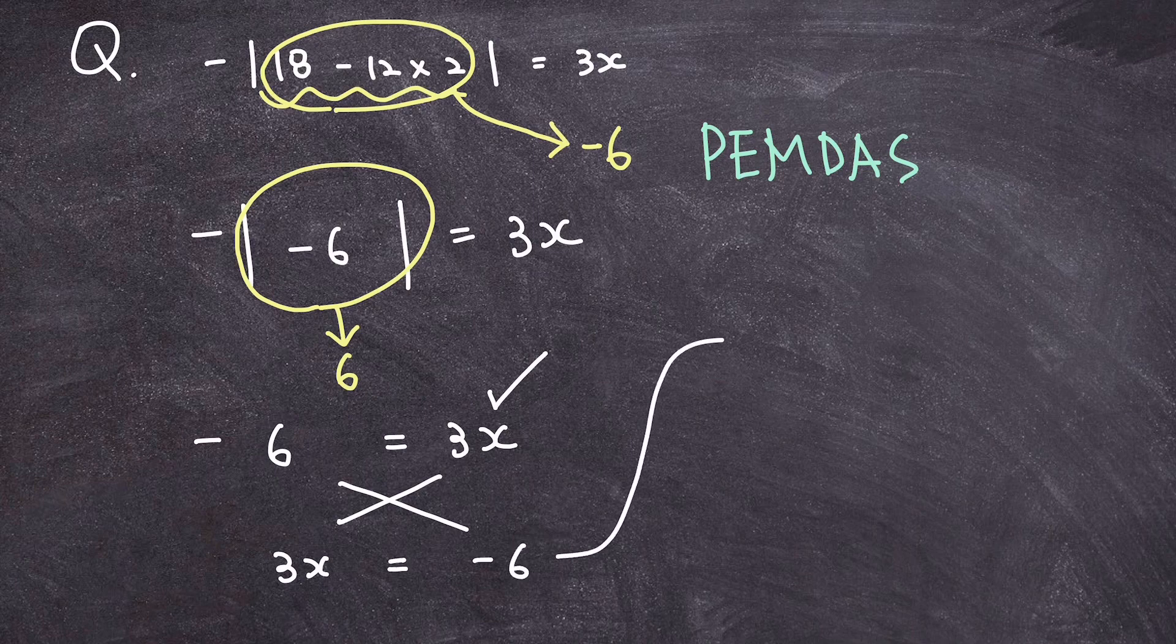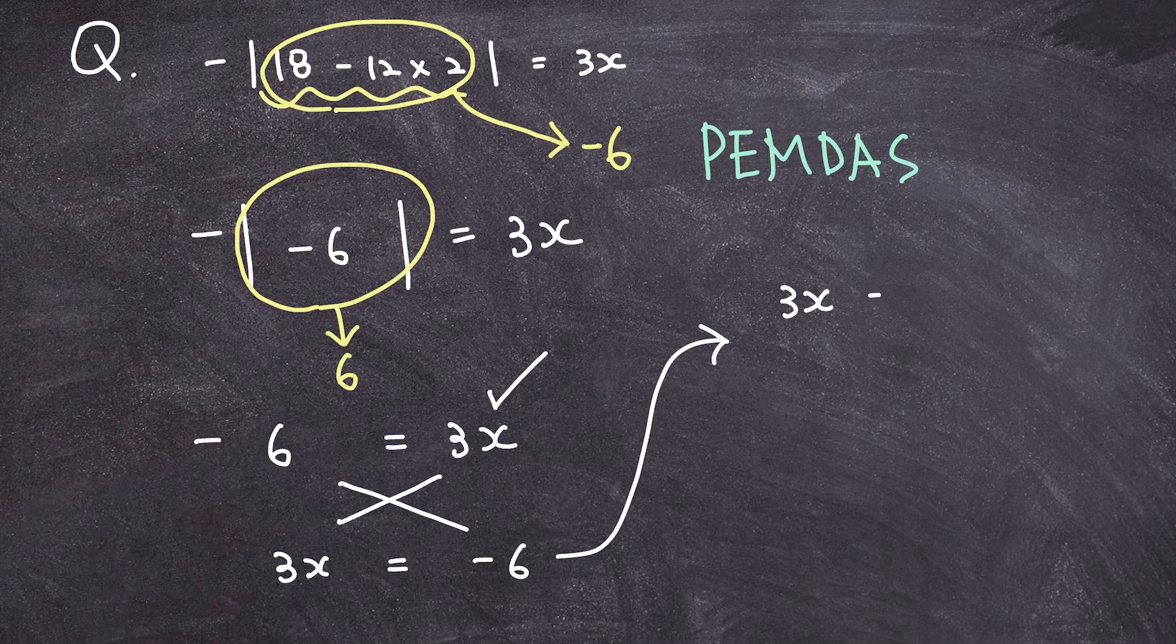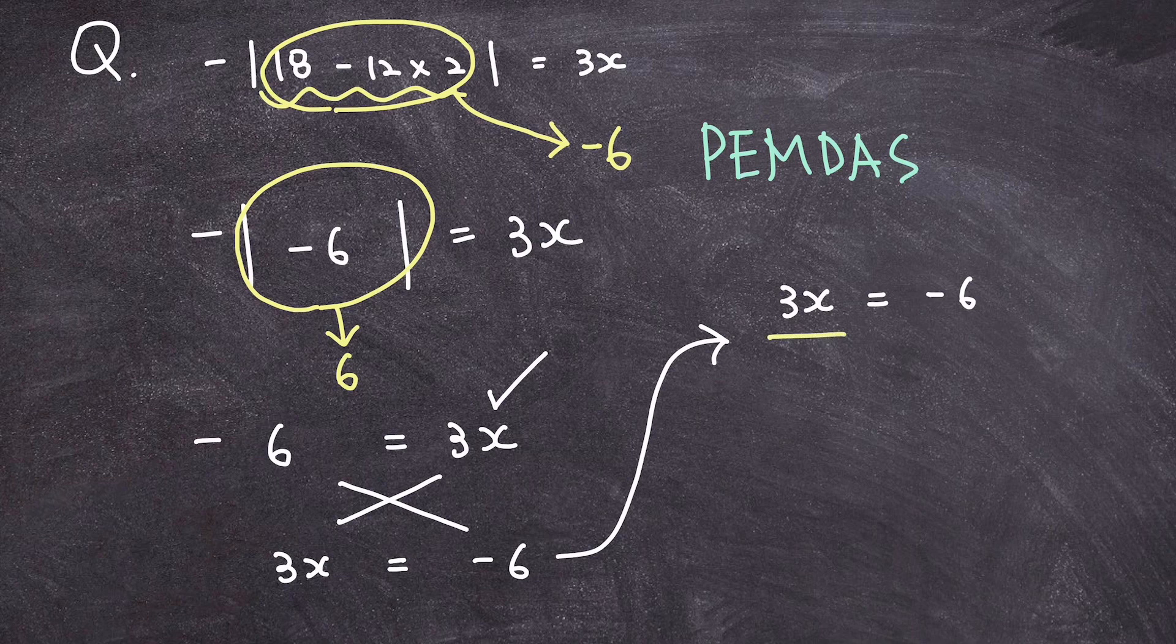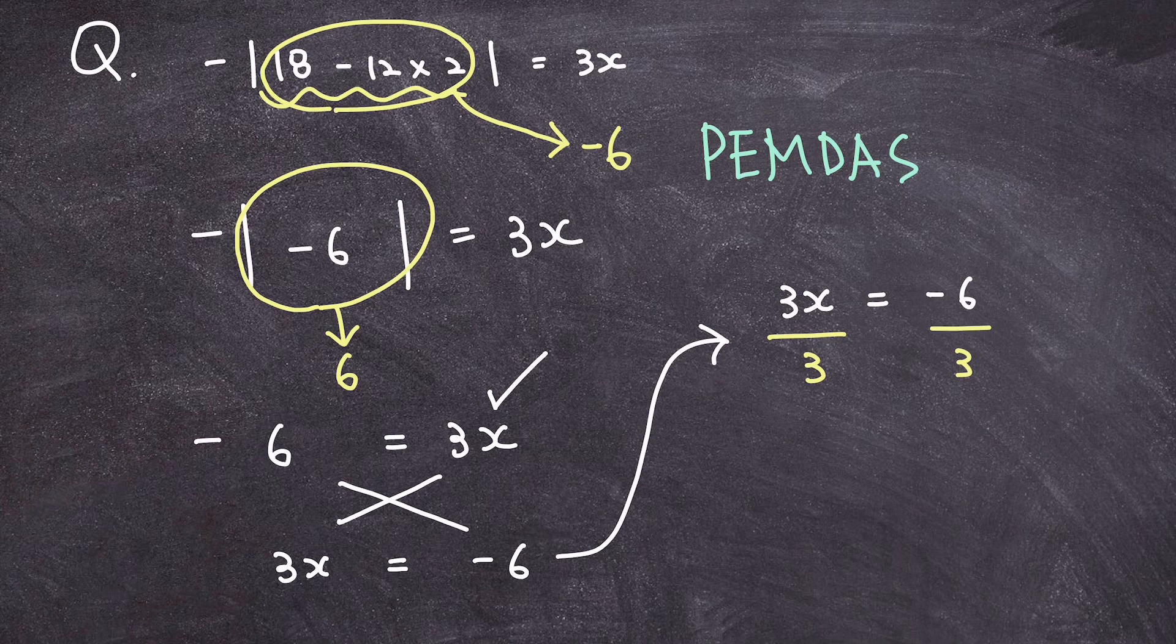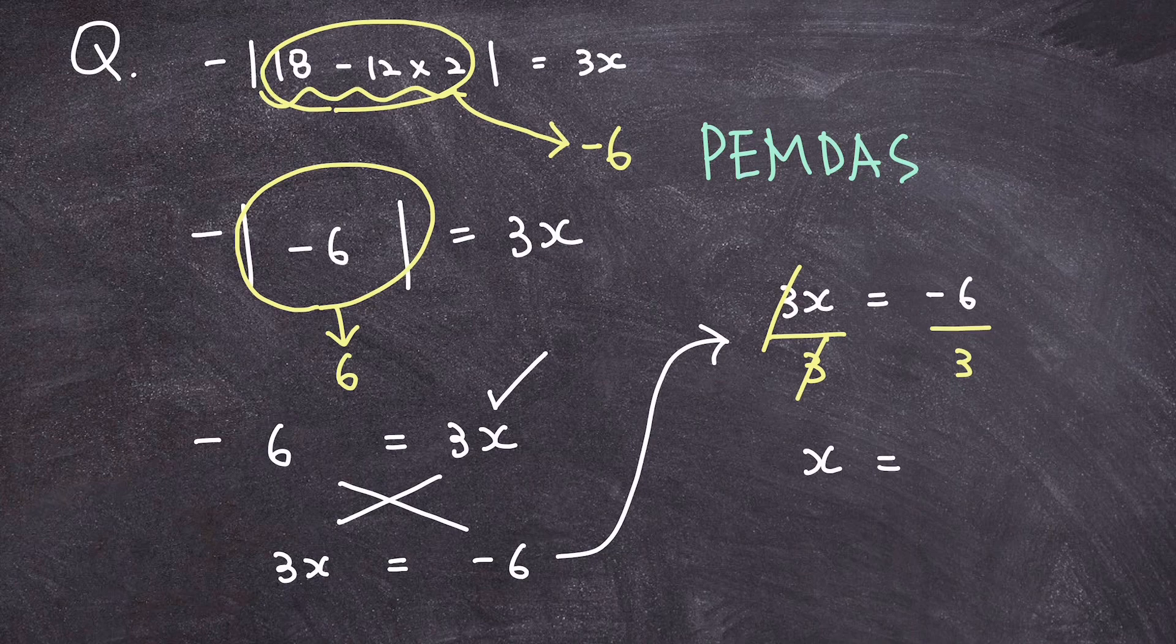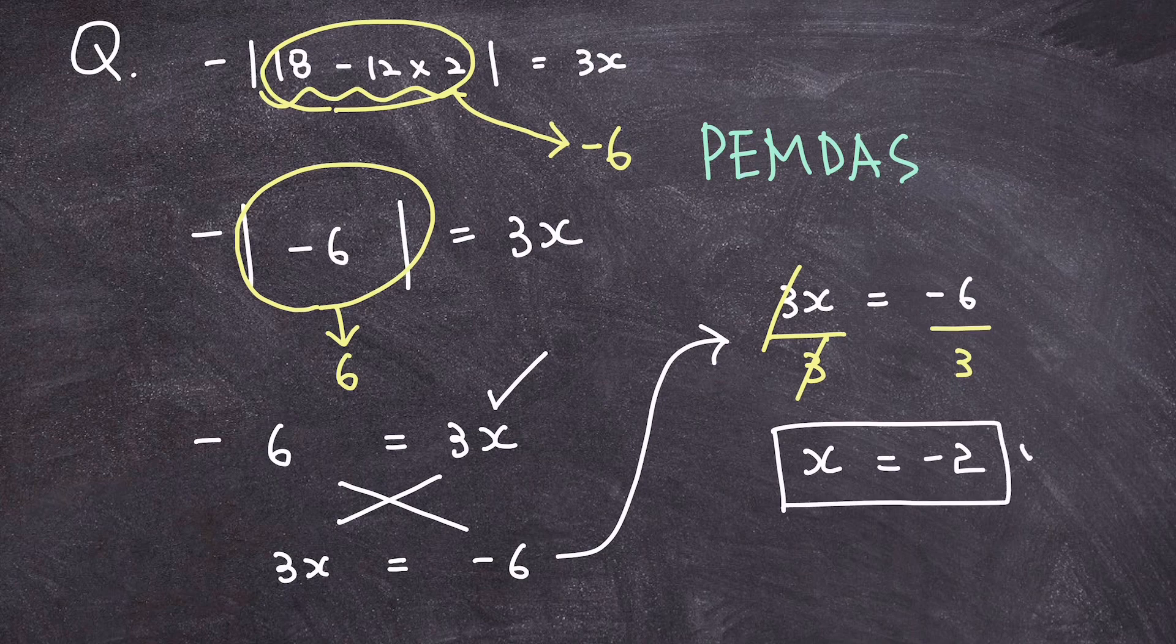And if I isolate the variable of x, I'm going to be done. And I can do that by dividing both sides with the coefficient of x, which is 3. I can cross-cancel that and end up with x is equal to negative 6 divided by 3, which is equal to negative 2. And this question is done.